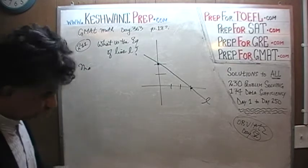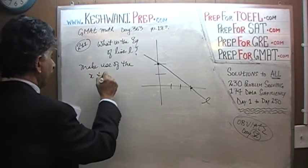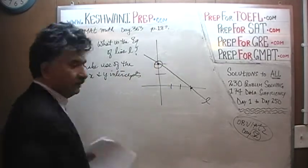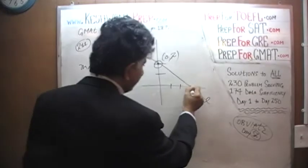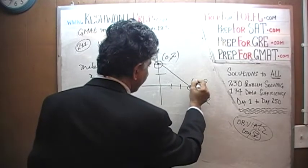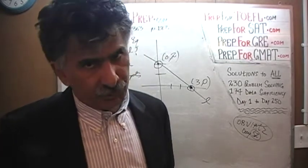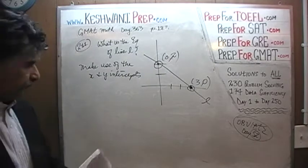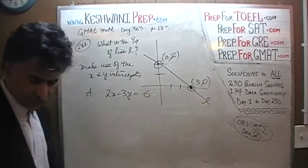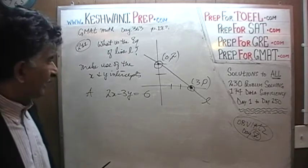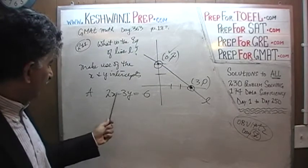Make use of the x and y intercepts. The y intercept tells us that when x is 0, y has to be 2. The x intercept tells us that when y is equal to 0, x has to be 3. We are going to make use of these two bits of information and eliminate four answer choices. Let's look at answer choice A, which says 2x minus 3y equals 6. We're going to start with the y intercept — replace x with 0.